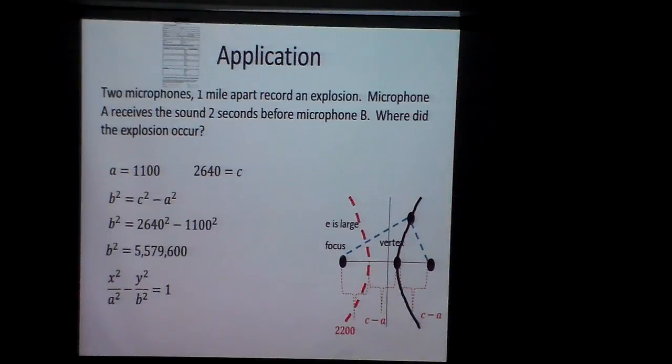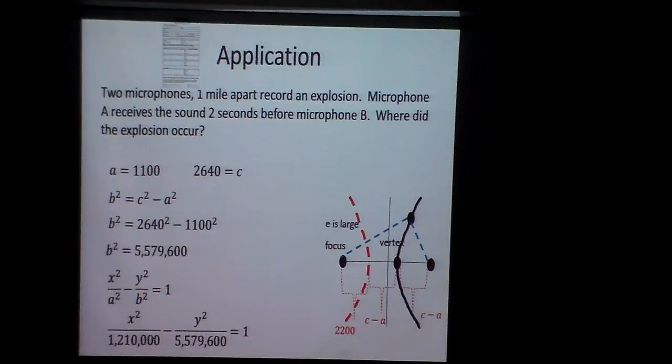So here's what we know. It's a hyperbola. This is a horizontal transverse, so I know it's x squared over the A. The A is 1,100. The B is the 5,579,600. And there is my equation for that particular explosion that we found by simply measuring distances.